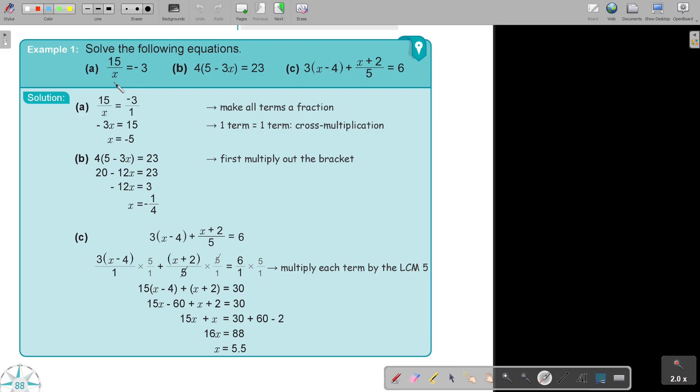Then the next one. 4, 5 minus 3X. So first multiply out the brackets. I multiply 20, I multiply negative 12X, and then I take the 20 over. So 23 subtract 20 will only be 3. I divide by negative 12 and I simplify and I get negative 1 quarter.